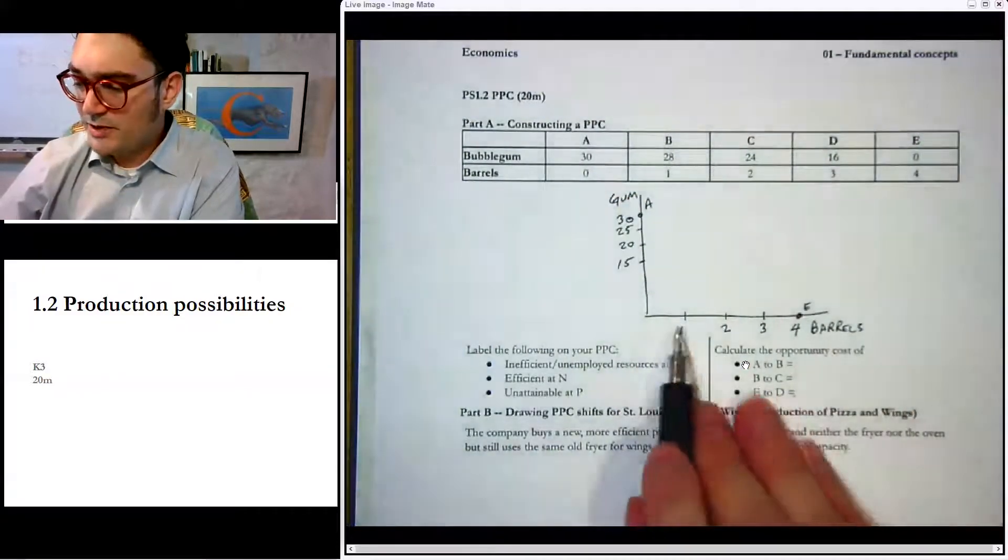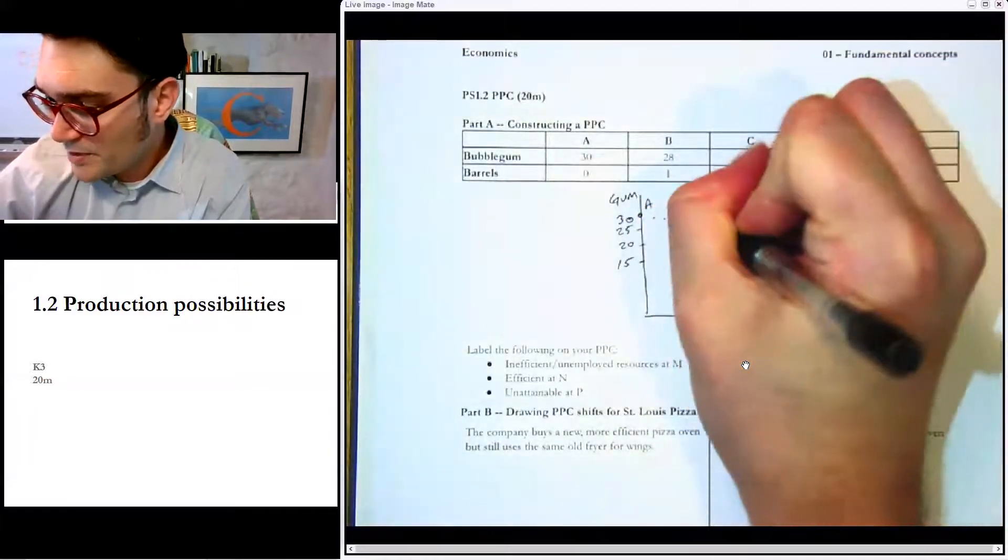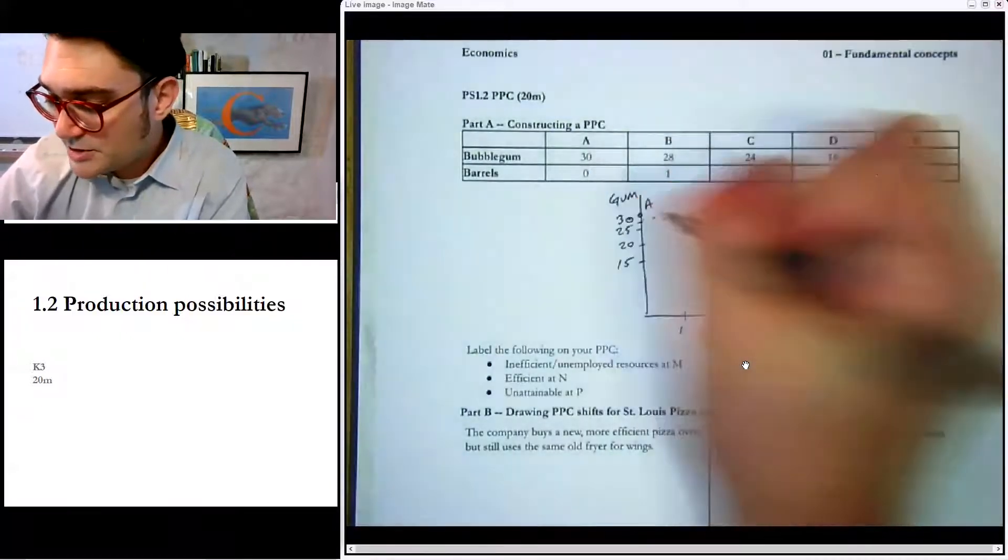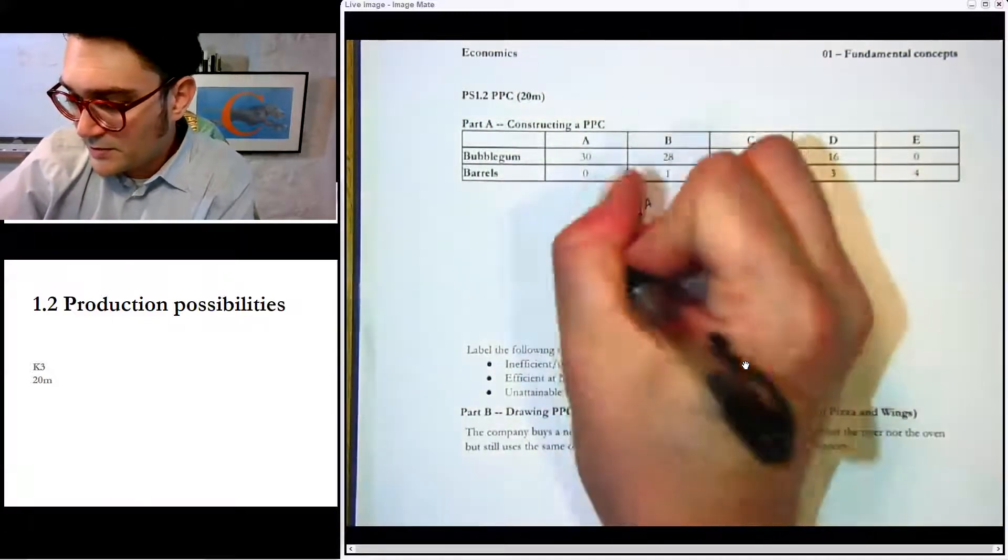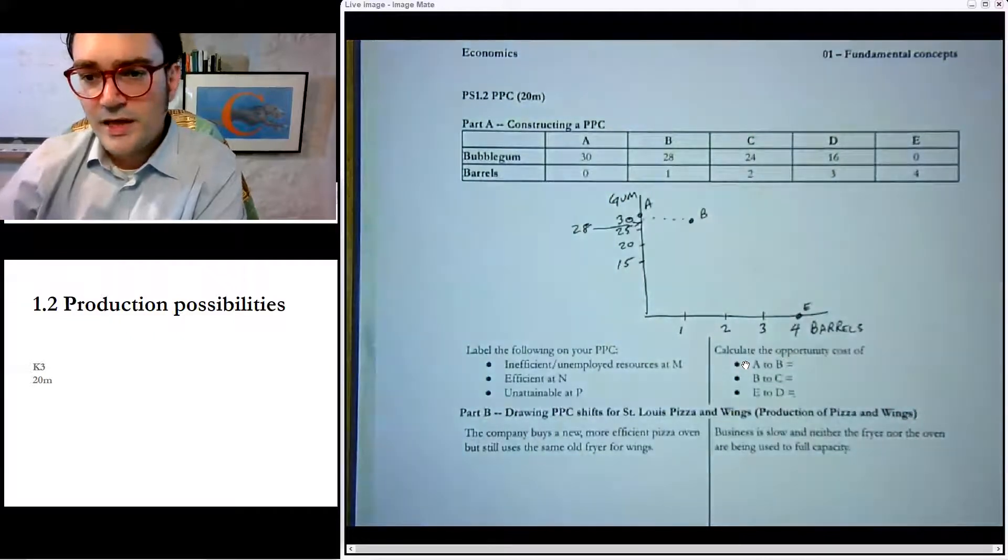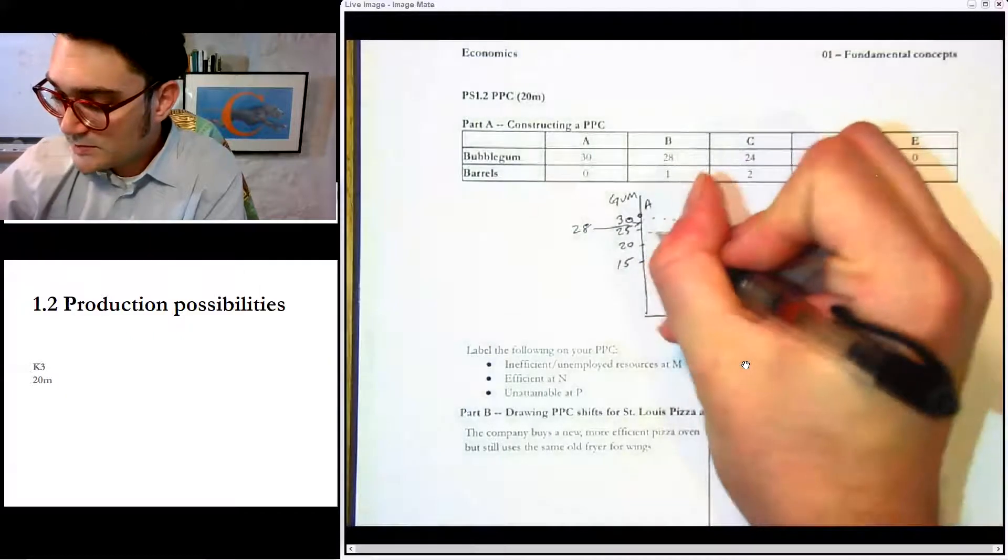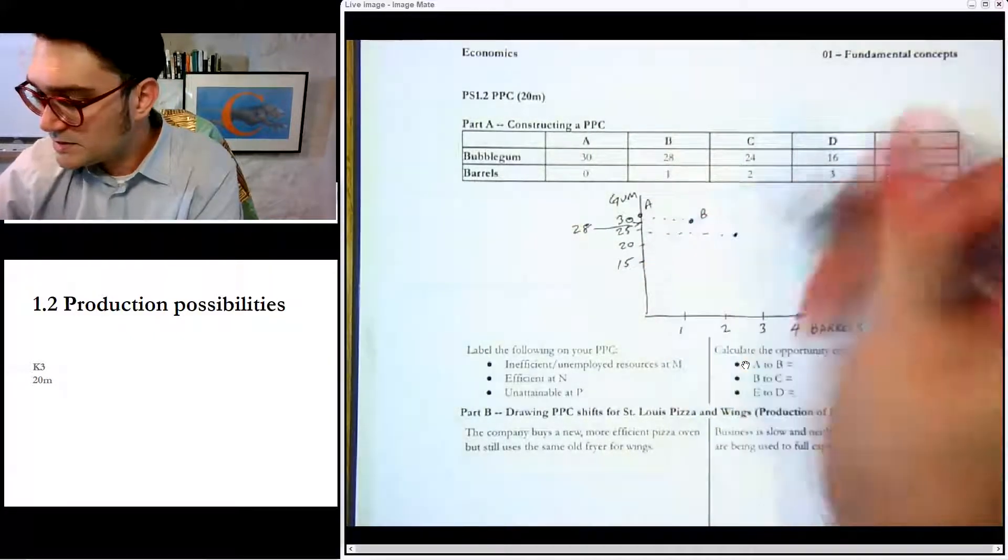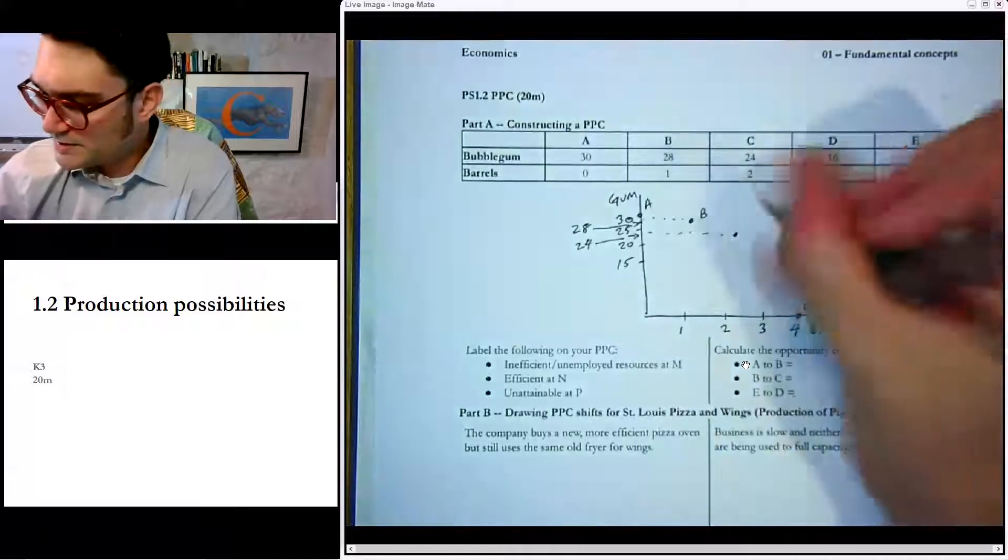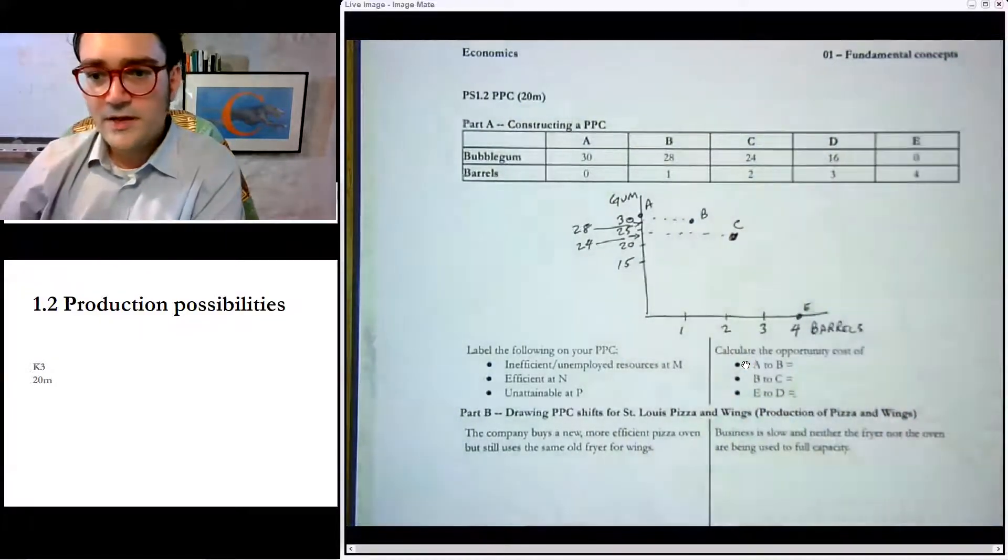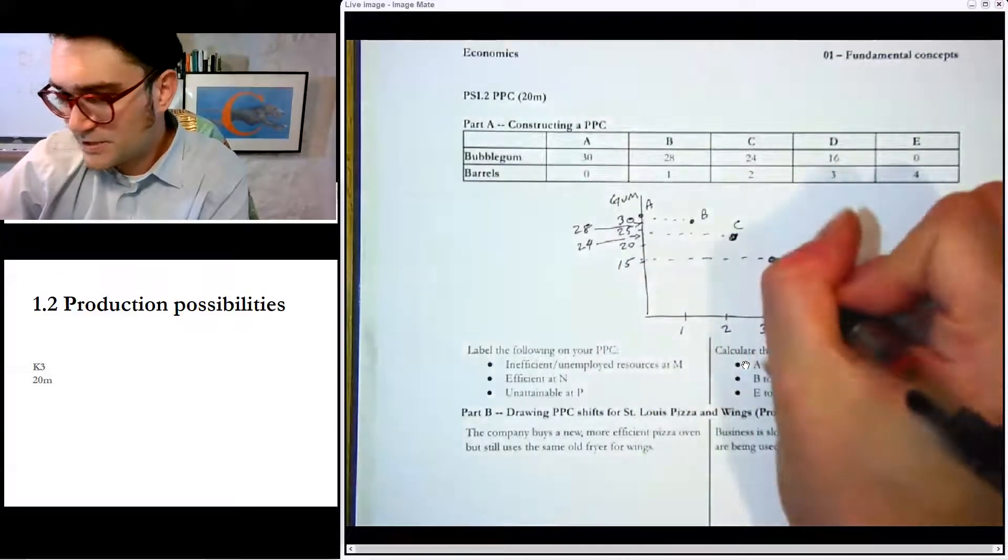Now, for the first barrel, that's going to be all the way right up here at point B. Point B is going to be just a little bit below point A at 28. So if you even want to draw a little arrow and say 28, we could do that. And then point C is going to be at 2 and 24, so that one's going to be pretty darn close, right in here. You could say 24, and that's going to be point C. And then point D is going to be 16, which is going to be here.